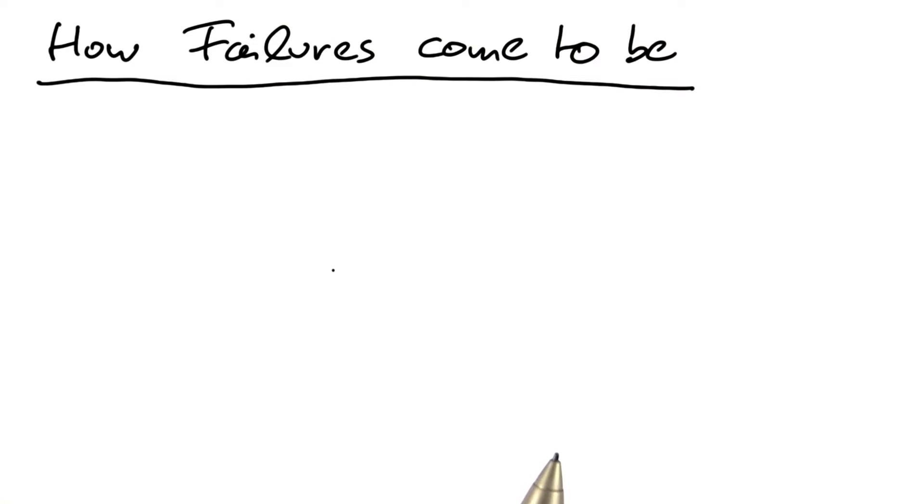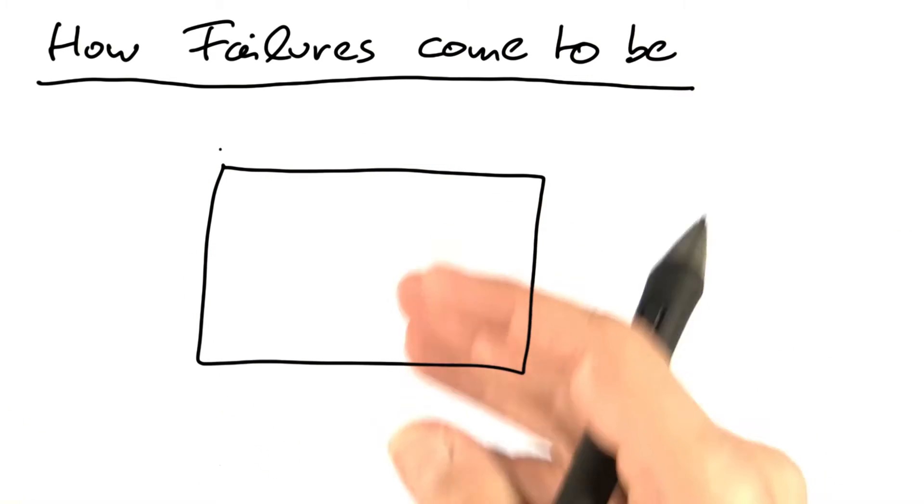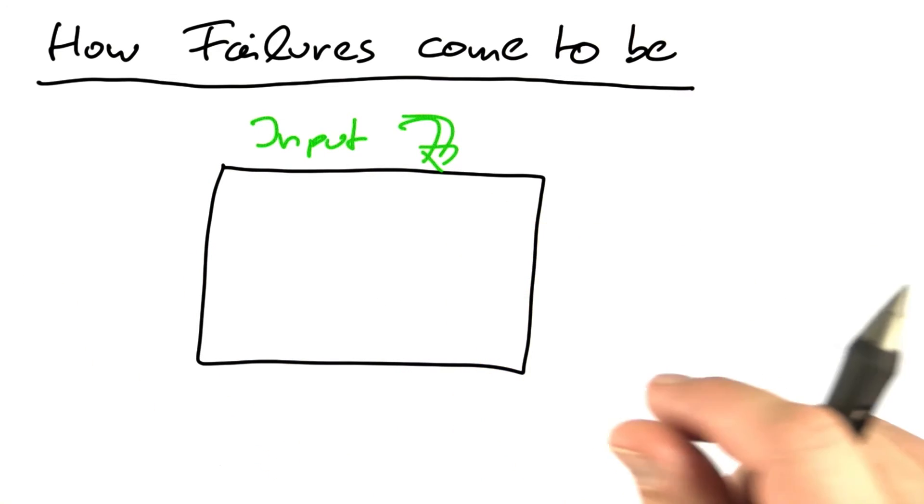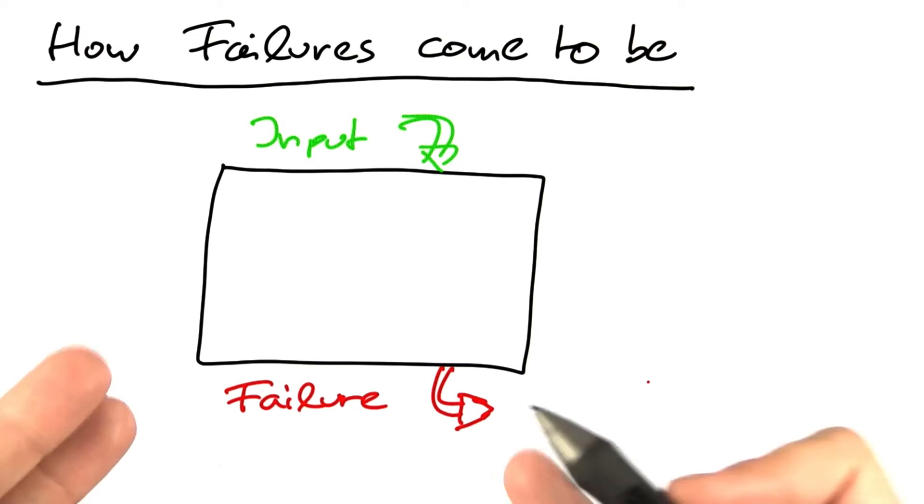Now let's proceed a bit more systematically. The situation we are in is classical. We have a program. The program gets some input and out pops a failure that can be seen by the user.